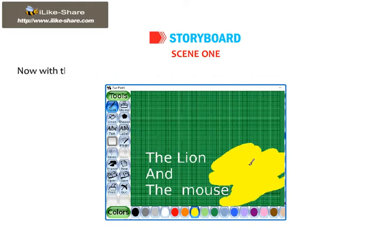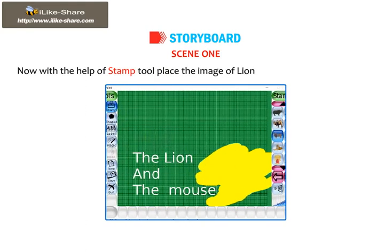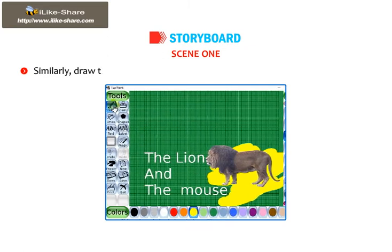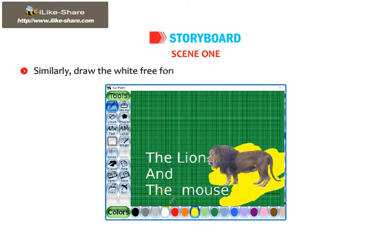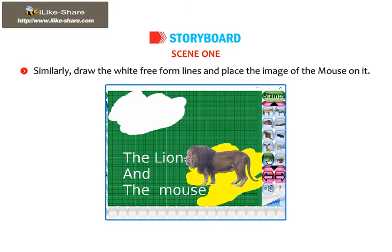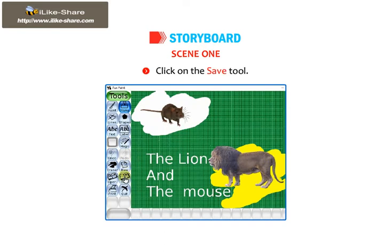Click on the Paint tool and draw the free-form lines using yellow color. Now, with the help of the Stamp tool, place the image of the lion on it as shown in the figure. Similarly, draw the white free-form lines and place the image of the mouse on it.